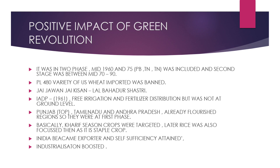There are two phases of the Green Revolution: one in the mid-1960s and one in the mid-1970s. The first phase was limited to Punjab, Tamil Nadu, and Andhra Pradesh. Rich farmers adopted the technology, and production of wheat, sugarcane, and rice increased substantially. The wheat variety imported from America was the PL 480 variety.